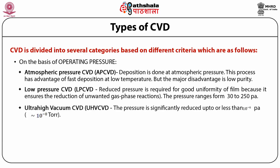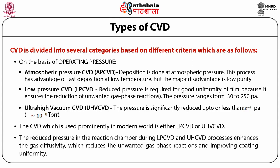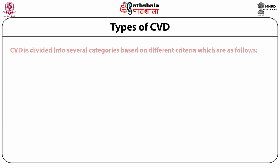Ultra high vacuum CVD (UHV-CVD) operates at pressures of 10⁻⁶ Pascal or less. The CVD prominently used in the modern world is either LPCVD or UHV-CVD. The reduced pressure in the reaction chamber during LPCVD and UHV-CVD enhances gas diffusivity, which reduces unwanted gas phase reactions and improves coating uniformity.